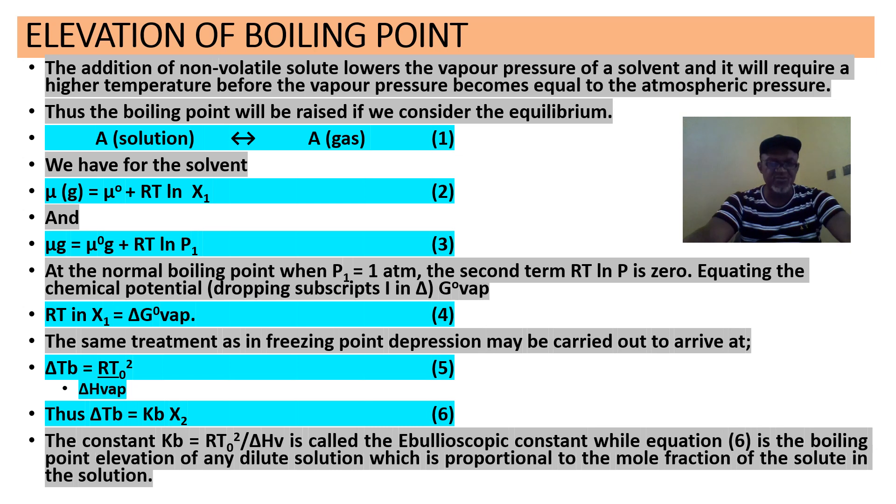And equation 3, if we drop subscripts again like we did in depression of freezing point. Now instead of fusion, we're going to have vaporization, the change in Gibbs standard Gibbs energy of vaporization. And one will rearrange that equation, we'll have equation 5. And then equation 6, which you can use for determination of molecular weight. Remember, x2 is N2 over N1.